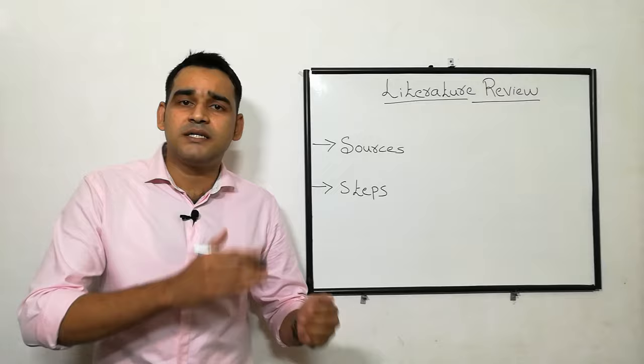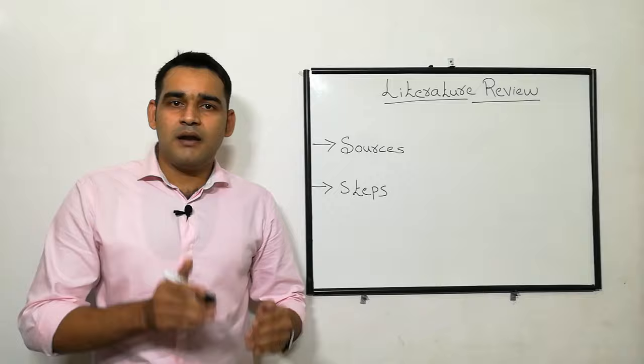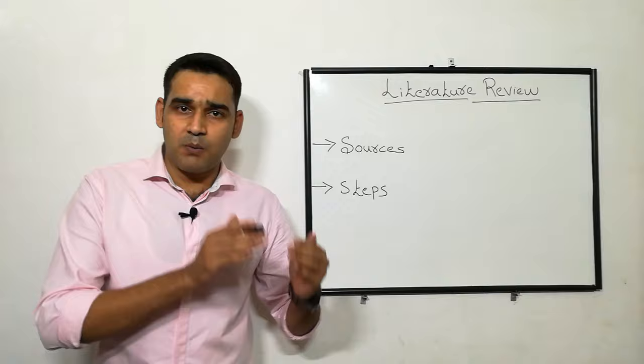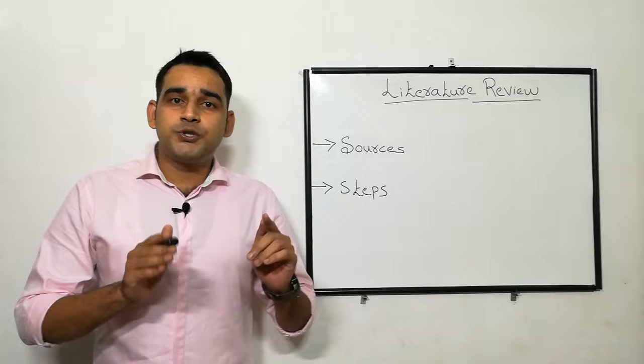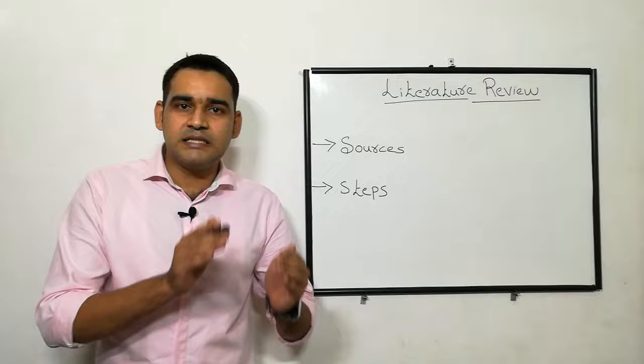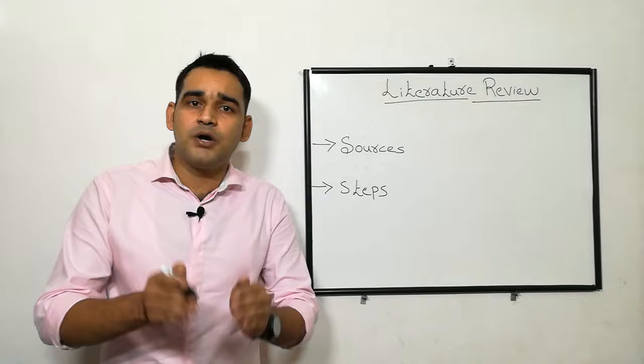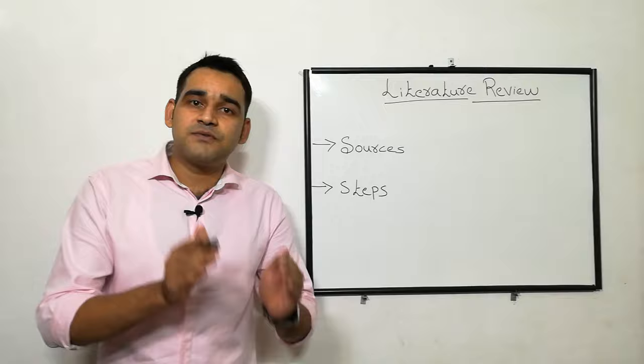Next, we can see the steps of literature review. The first step is identifying the concept of the research problem and identifying the key terms to search. For example, with 'effect of smoking on lung cancer,' you know the concept of your research problem. Now you have to identify the key terms — here the terms are 'lung cancer' and 'smoking.'